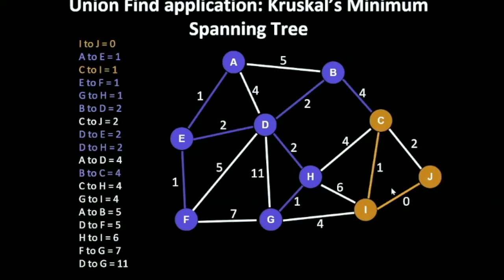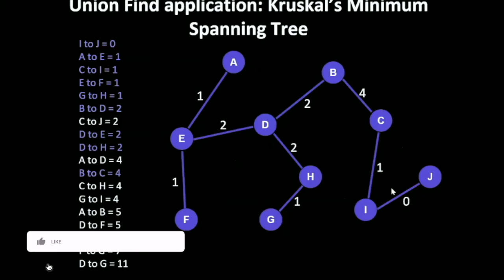And then B and C, they belong to different groups. So they are going to get connected to each other. Now we have all the nodes which are blue. And we have got our minimum spanning tree. That is our minimum spanning tree.